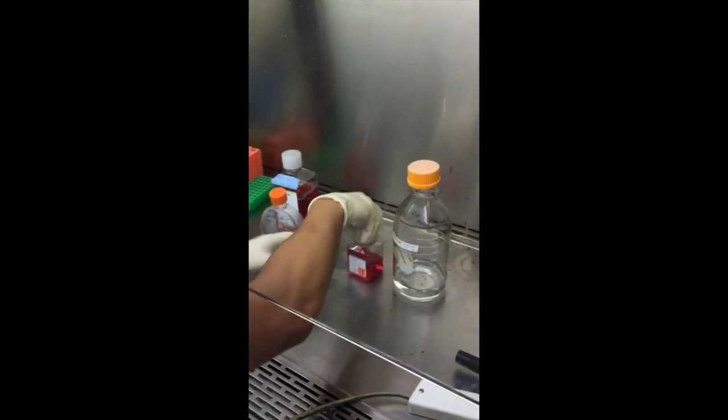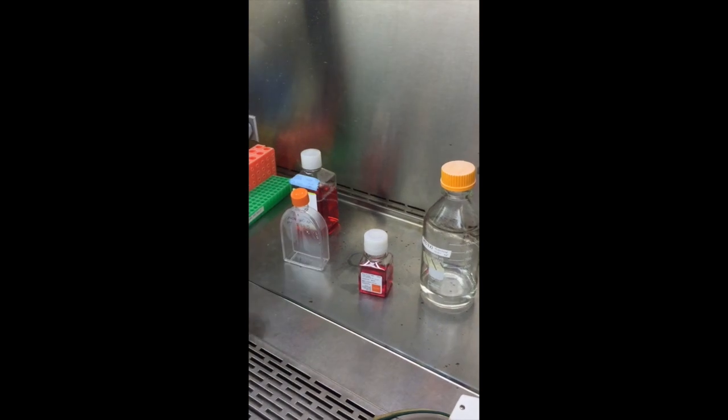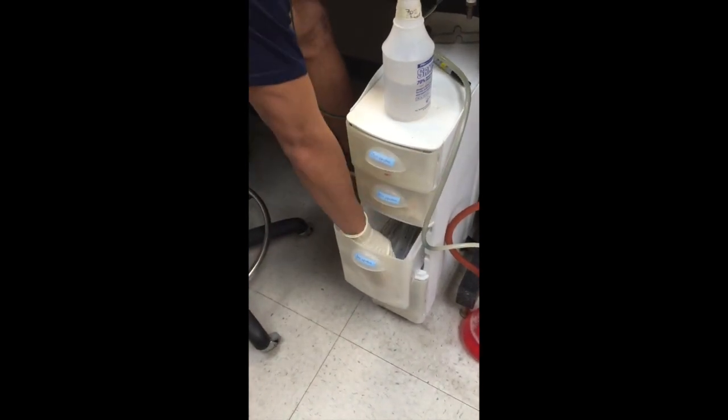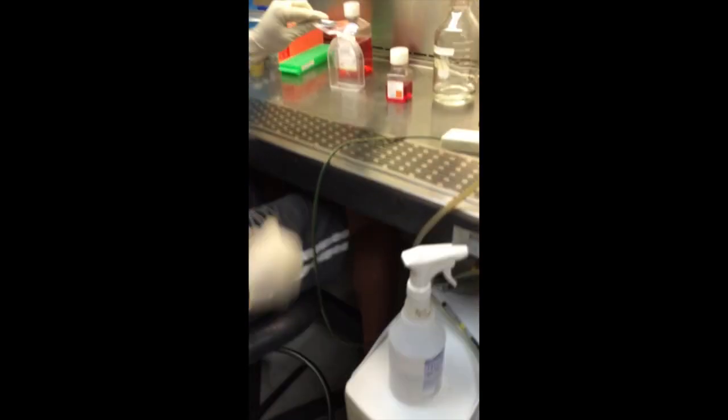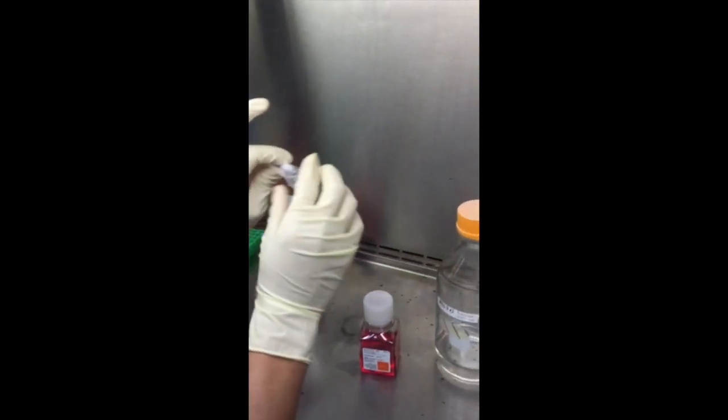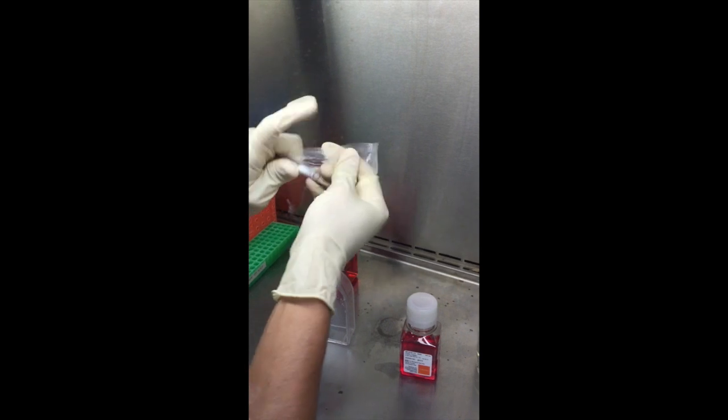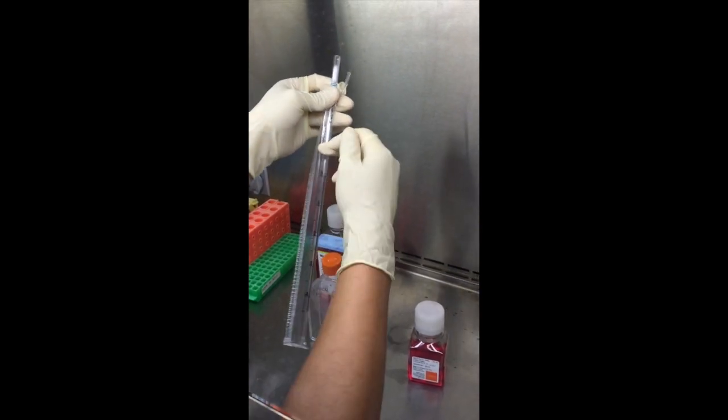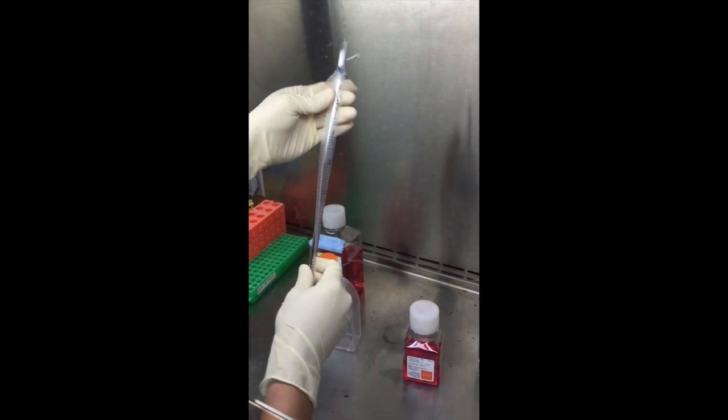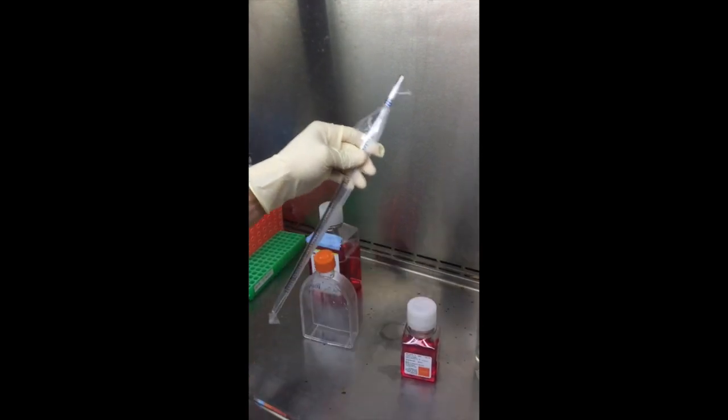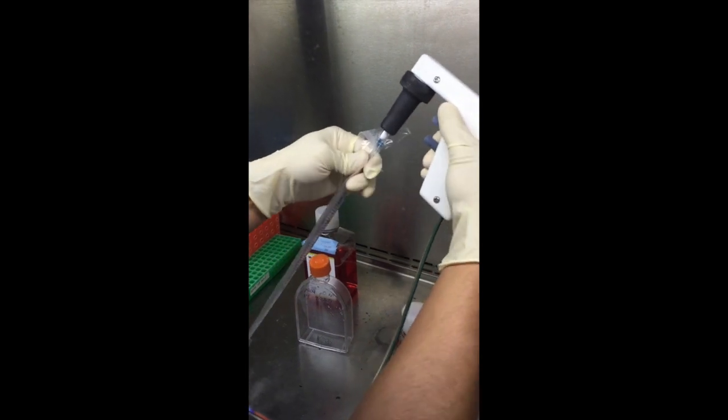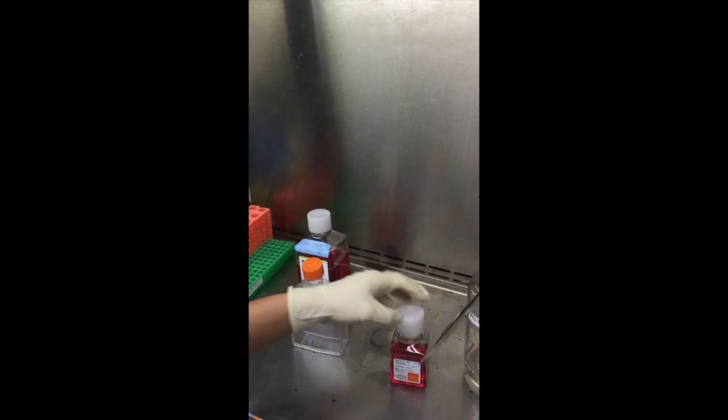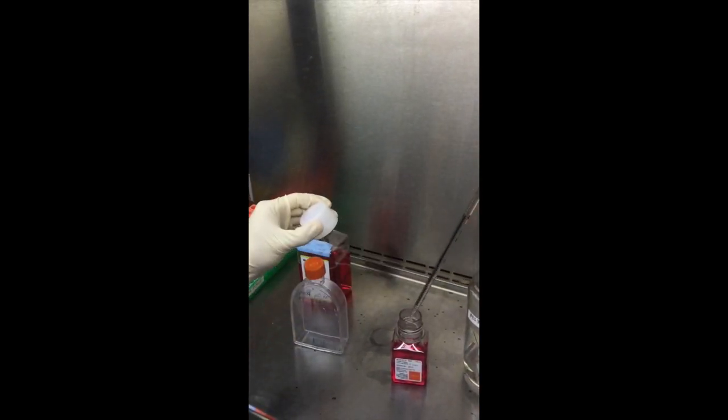So next thing I'm going to add is trypsin. So again, I'll loosen up my lids. I'm going to use a five mil pipette. Here you have fives, tens, and 25s. I open it with the side that goes into the pipette aid, never by the tip. It also makes it easy, here you have like the zero, one, two, three, four counting down. Makes it simpler if I have the side that counts up facing me. So a lot of times I'll turn it to where it's facing me, and that just makes measuring a lot easier.